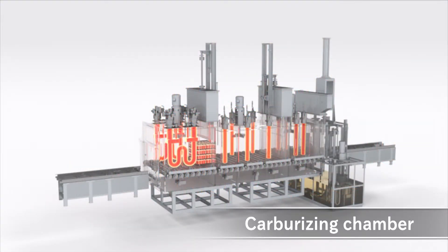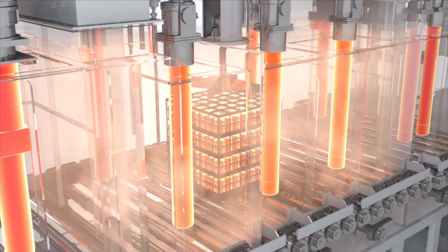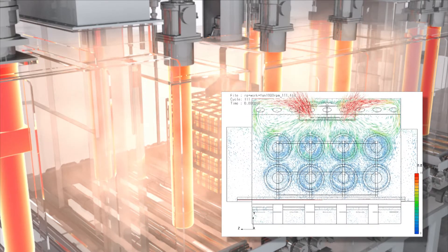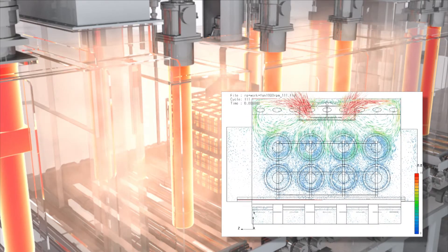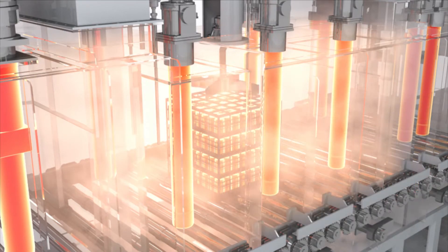After the heating chamber, the product goes to the carburizing chamber. To achieve uniform quality of the product, the system checks in advance the flow and amount of gas inside the furnace by simulation. Based on the data collected by the simulation, the gas nozzle is set to an optimum position.